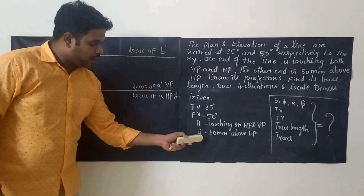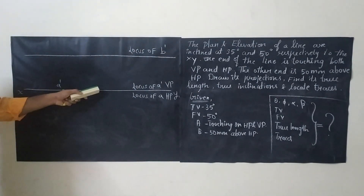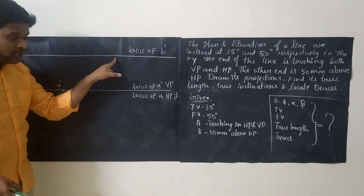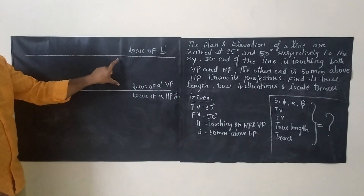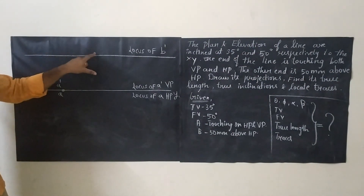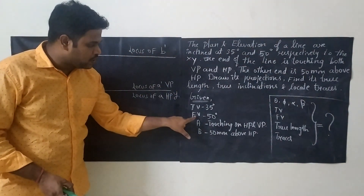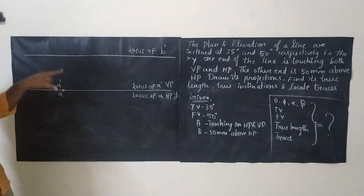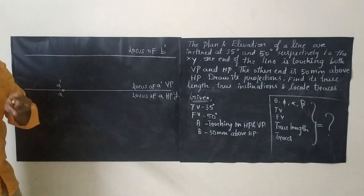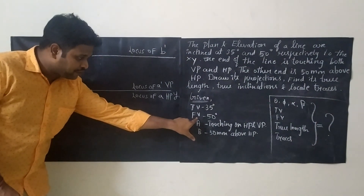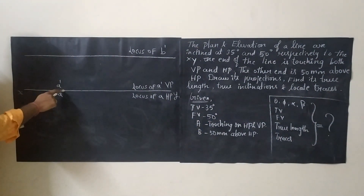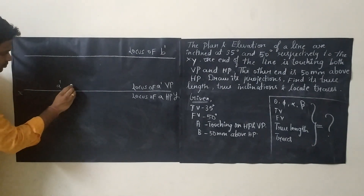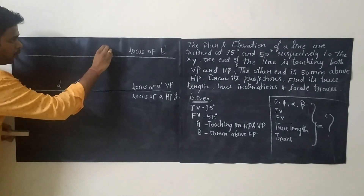The next hint is point B. Since B is 50 mm above HP, from the reference line, take 50 mm and draw a straight line — this is the locus of B-dash. We know B-dash must lie on this locus. Using the front view angle of 50 degrees, keep your protractor at point A-dash and draw a line at 50 degrees. That line meets the locus of B-dash at one point, and that point is called B-dash.